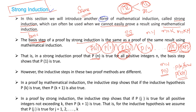The Inductive Steps in the two proof methods are different. In Mathematical Induction, we just assume P(K) is true and prove P(K+1) is true. But in Strong Induction, P(J) is true for all positive integers not exceeding K. The condition here is 'not exceeding K.' I will show a ladder example to illustrate this.